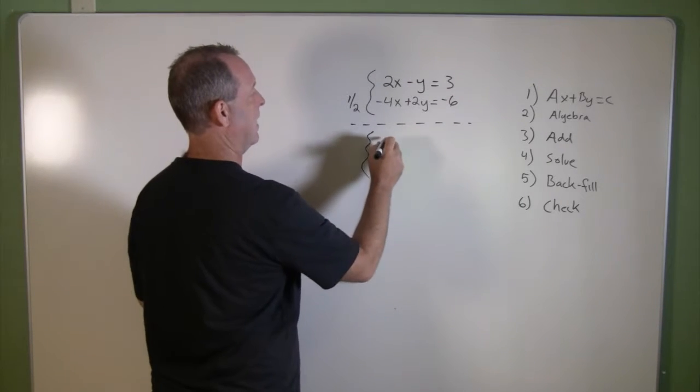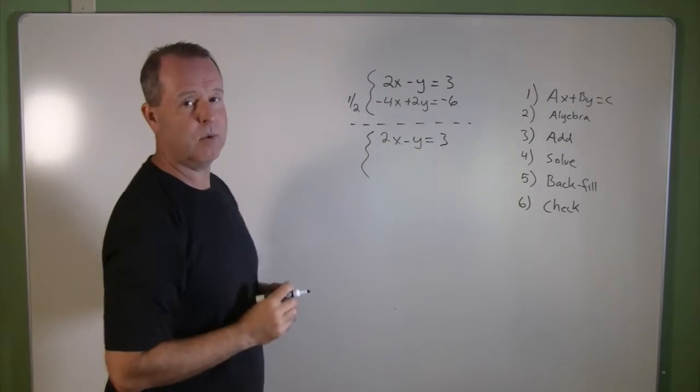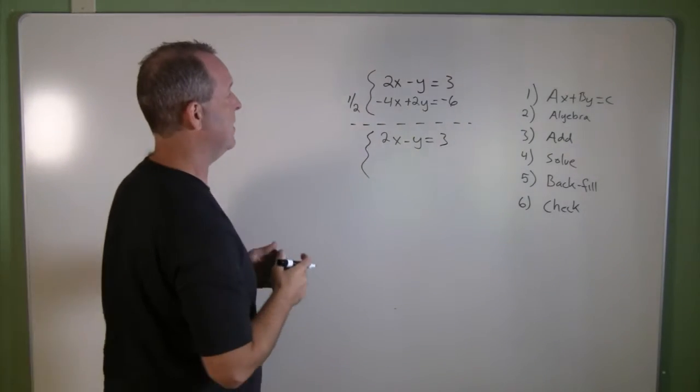So I have a new equation. Top one is two x minus y equals three. The bottom one, I'm going to multiply by one half to both sides of the equation.